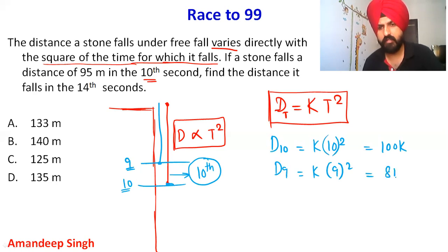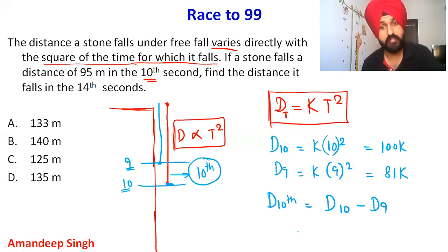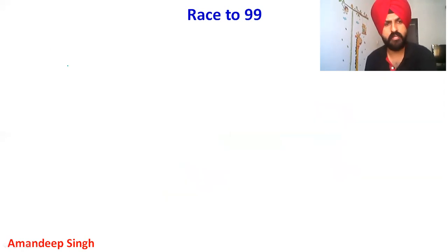Distance in 10 seconds will be 100k, and distance in 9 seconds will be 81k. So the 10th second distance is 100k minus 81k. Since the 10th second distance is given as 95 meters: 95 equals 19k, which gives k equals 5.